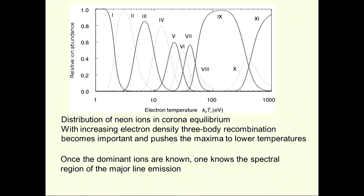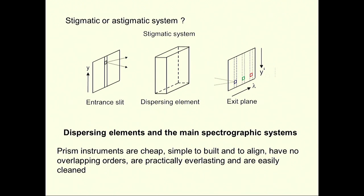Once you roughly know the temperature and have selected your spectral region, you can go ahead with another consideration: do you want a stigmatic system or an astigmatic system? In a spectrograph, you have an entrance slit and a dispersing element. A point on the slit is imaged at one location, another point is imaged elsewhere, and in this direction you have the wavelength scale. So you can get the spectrum from an image of the plasma if you image your plasma on the slit.